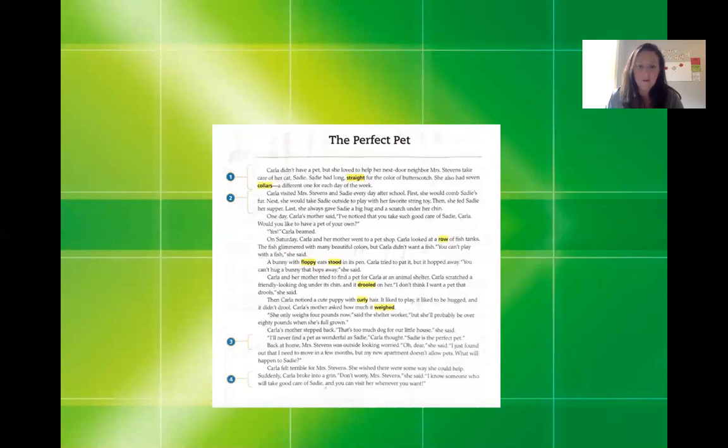Carla felt terrible for Mrs. Stevens. She wished there was some way she could help. Suddenly, Carla broke into a grin. Don't worry, Mrs. Stevens, she said. I know someone who could take good care of Sadie. And you can visit her whenever you want. So thinking about that, how does the story end? What happens to the perfect pet, Sadie?